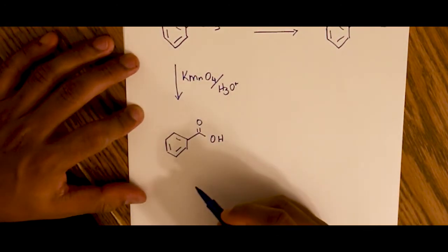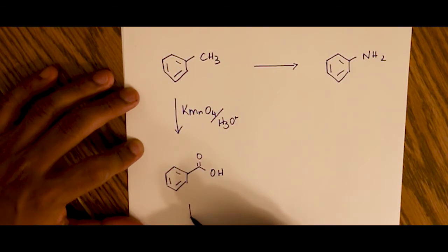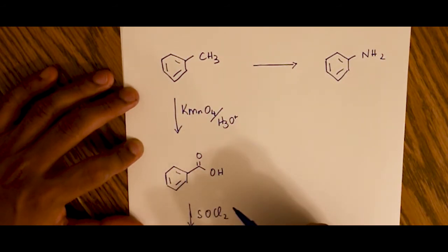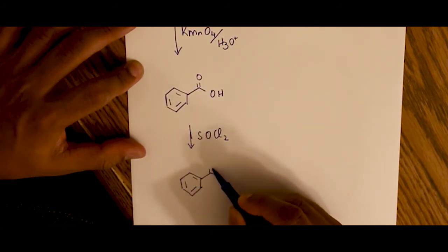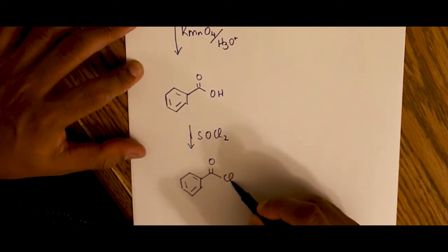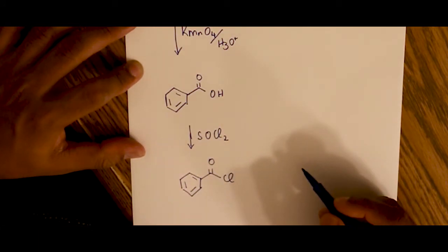Then we use thionyl chloride, that's SOCl2, to give us an acid chloride. So the benzoic acid now is getting converted into the acid chloride. The Cl replaces the OH.